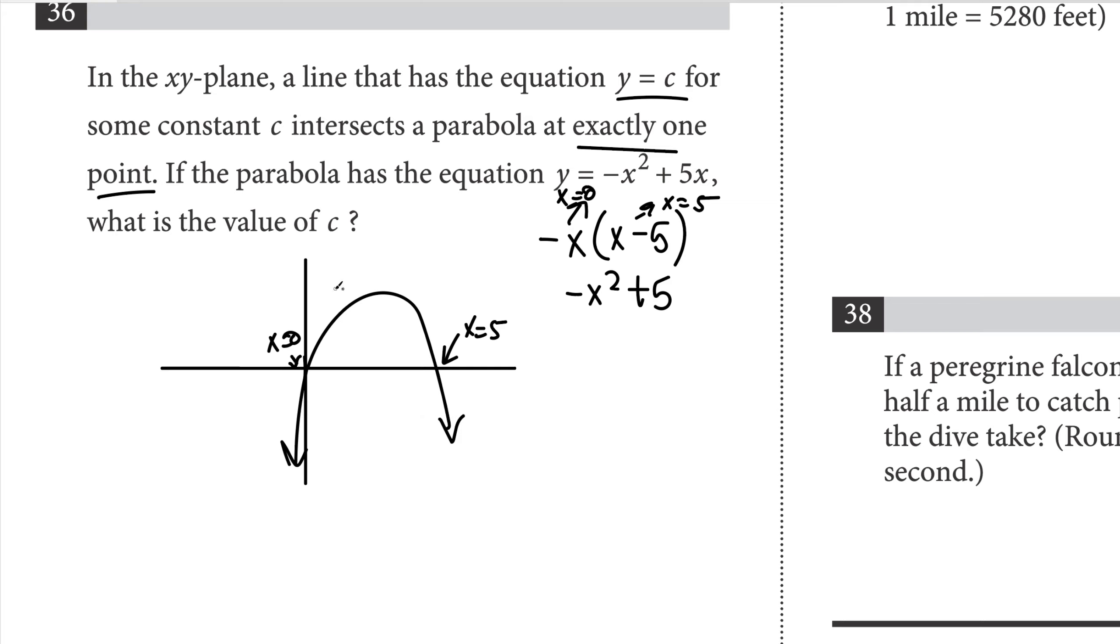In a parabola, if we were to take y equals c and put it down here, that would be two intersections, one right here and one right here, which is not good. Now the place where the parabola intersects with a line at only one point would be at the vertex. In this case, since it's a downward facing parabola, the vertex would be in the first quadrant. The vertex is going to be in the middle between x equals 0 and x equals 5, because the parabola is symmetrical in its shape. So x equals 2.5.